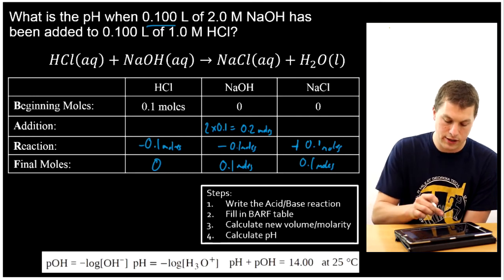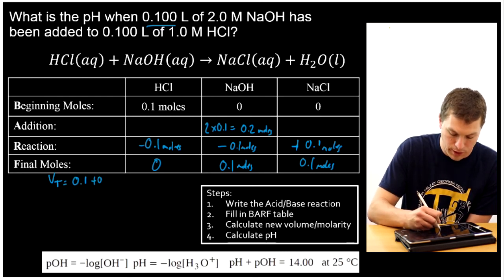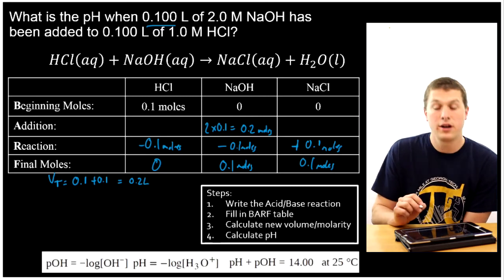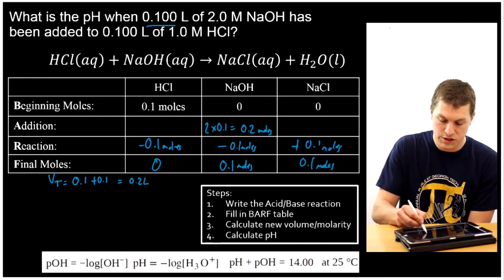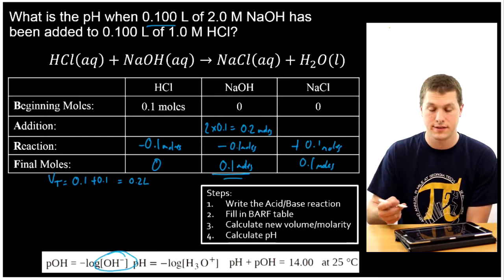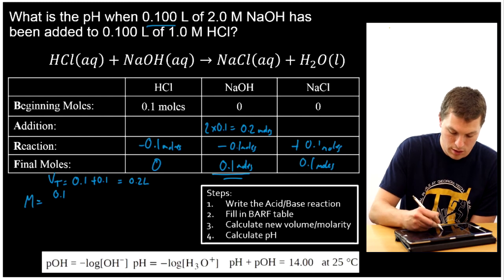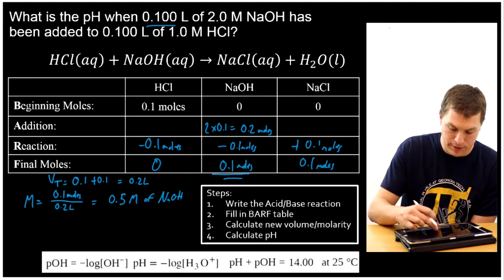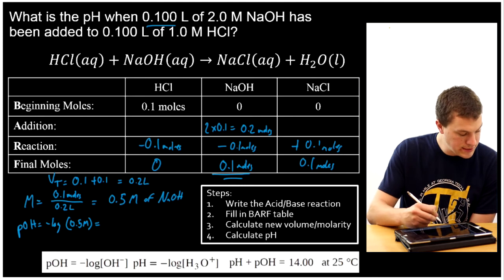My new total volume is 0.1 plus 0.1, or 0.2 liters. Now I need to calculate molarity. My acid is all gone, so I care about my sodium hydroxide — I need the concentration of hydroxide ion to calculate pH. My molarity of NaOH is 0.1 moles divided by 0.2 liters, giving 0.5 molar. I can't directly calculate pH, so I calculate pOH first: pOH equals negative log of 0.5 molar NaOH, which is 0.3.